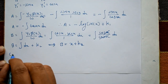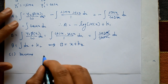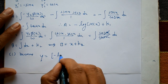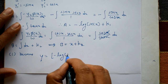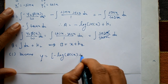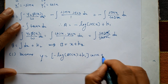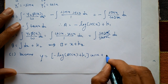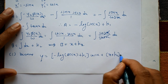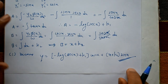Substituting a and b into equation (1): y = a·cos(x) + b·sin(x) = (-log|sec(x)| + k1)·cos(x) + (x + k2)·sin(x). This is the required solution.